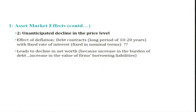Moving to the second aspect: unanticipated decline in the price level — for example, deflation. If the decline is anticipated, the market will be prepared accordingly. But if it is unanticipated, let us see how it affects the interest rate. Most interest rates are fixed and in nominal terms. Suppose the agreed interest rate is 5% for the next 20 years. If there is deflation, they still have to pay 5%, but because deflation increases the value of money, in real terms that 5% may be equal to 10%, 15%, or even 20%.